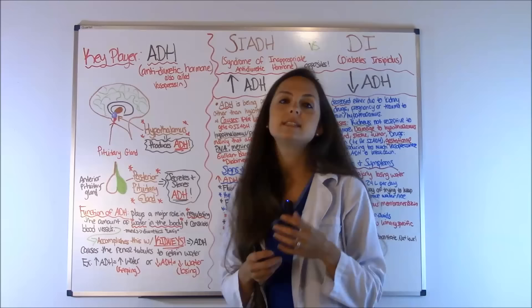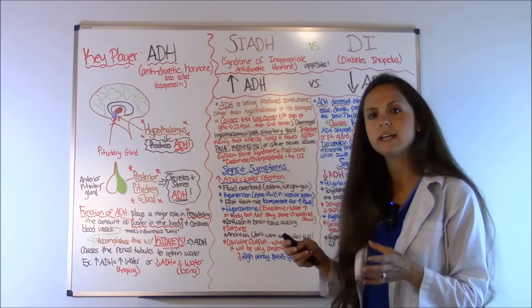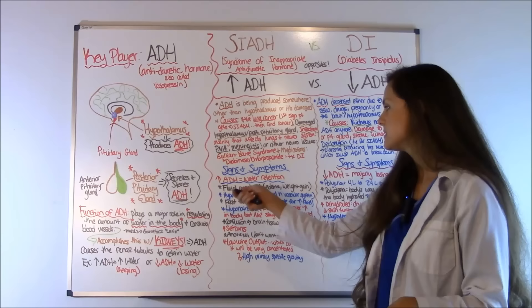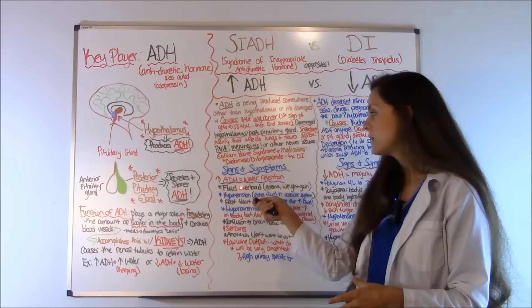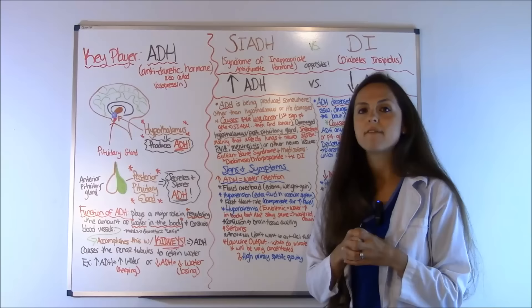How do these patients present? If you understand the anti-diuretic hormone, the signs and symptoms make complete sense. Let's recap: in SIADH, you have increased anti-diuretic hormone, which retains water. So when you're retaining too much water, you're going to have water intoxication all over the body — the patient is going to have fluid overload, too much water in the vascular system, and it's going to be backing up everywhere.